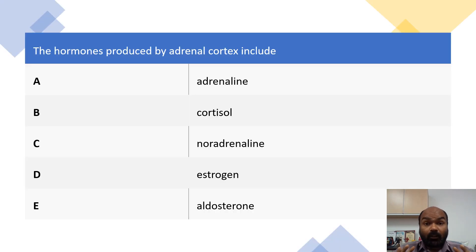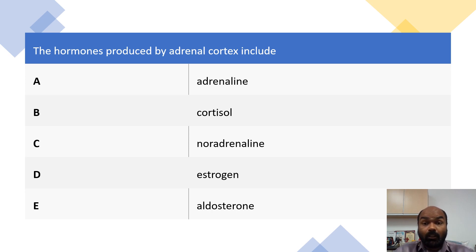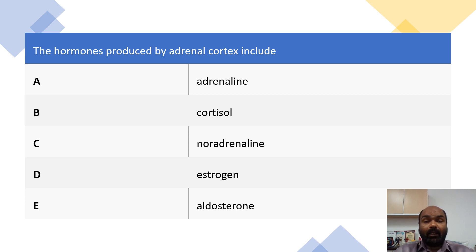So let's go through the question together. The hormones produced by adrenal cortex include — this is a type X, so answer true or false. A: adrenaline. B: cortisol. C: noradrenaline. D: estrogen. E: aldosterone.